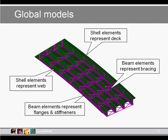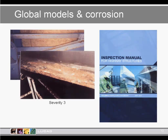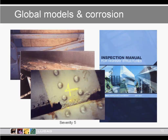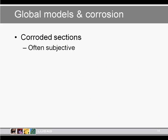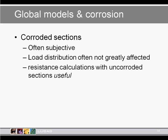The UK Bridges Board produces a highly regarded inspection manual, which allows us to consider corrosion — an important part of assessment work. It allows us to classify corrosion severity indices 2, 3, and 5. However, how we apply these to our models is not altogether clear. For corroded sections, load distribution is often not greatly affected, as the overall depth of the section is not affected by corrosion on the perimeter. We could also perform an initial calculation to assess resistance assuming uncorroded sections, because if uncorroded sections are already inadequate, any assumptions for corrosion loss becomes academic.